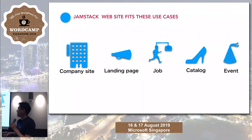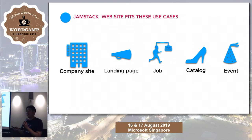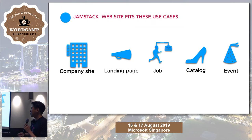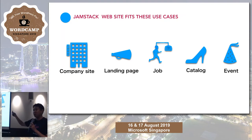JAMstack websites fit these specific cases. For example, company sites, landing pages, and job sites are typical cases because they are almost stable. Seasonal catalogue sites are usually updated once or twice a year. And for event sites, once the tasks are done, we do not update them anymore.